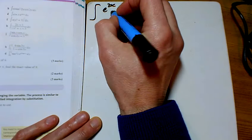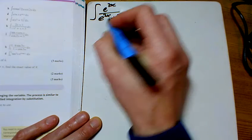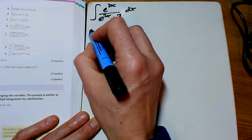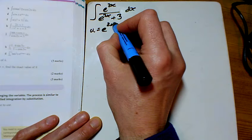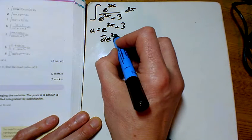For e, we've got e to the 2x plus 3 on the bottom. That's what we're going to let u equal, and that differentiates to 2e to the 2x plus 3.